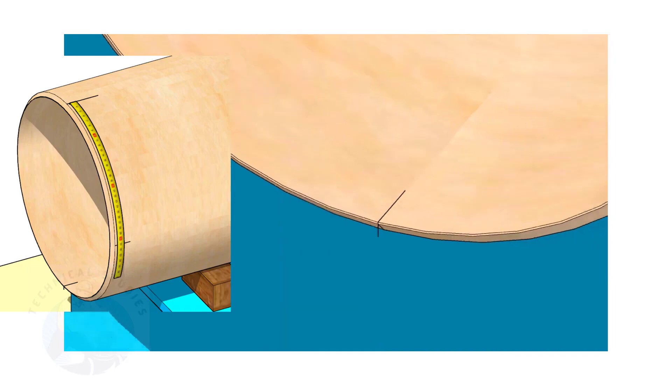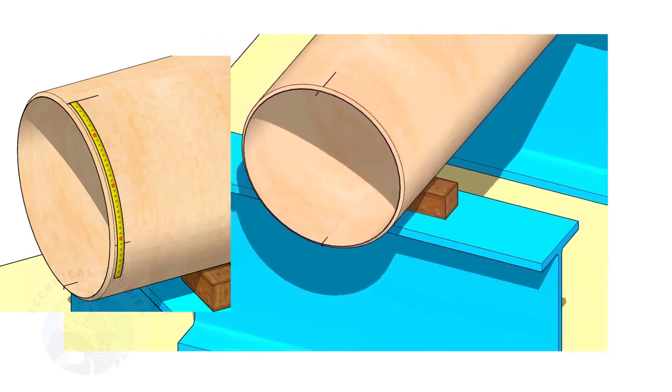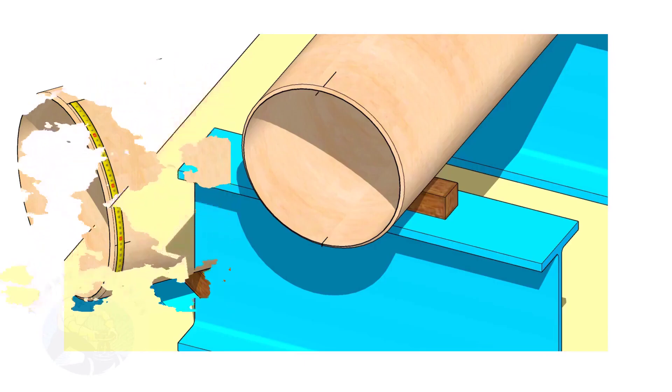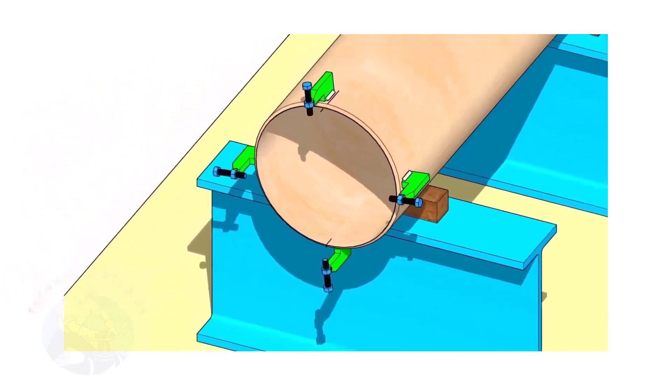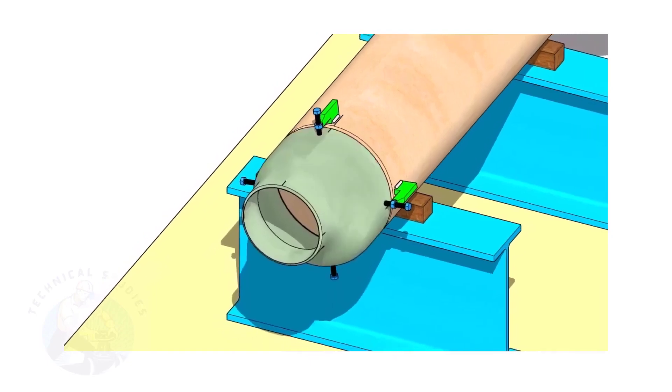Mark the quarter circumference on both sides of the pipe. If you don't have a pipe aligning clamp, tack weld four number jack bolts 90 degrees apart, as shown.